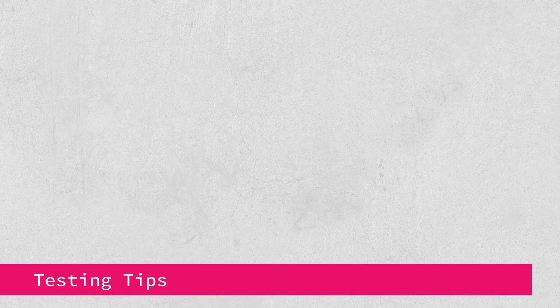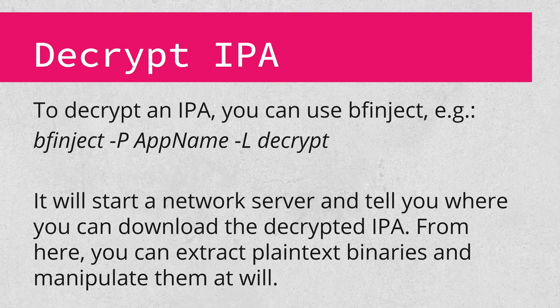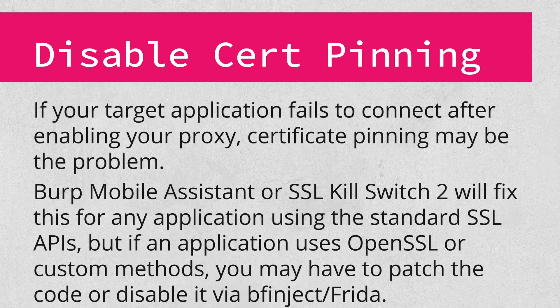Finally, we come to the part of the session covering essential testing tips and tricks. To decrypt an IPA, you can use BFInject — it has a great decryption function built right in. You simply run the command on the device, replacing the app name with the actual name on disk of the application you're trying to decrypt. Once you do that, it'll start the decryption, set up a little server to serve the decrypted IPA, and tell you the command to run on your computer to download it. Cert pinning isn't something you'll run into for most apps, but it will cause headaches when present. If your proxy is set up properly but you're not able to get an app working, cert pinning is likely the root cause. Burp Suite Mobile Assistant or SSL Kill Switch 2 will handle the vast majority of cases.